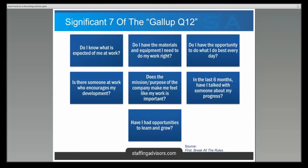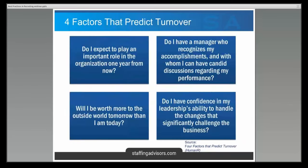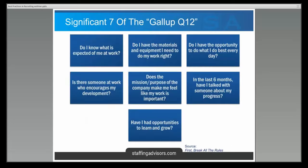Additional key Gallup questions: In the last six months have I talked with someone about my progress? Have I had opportunities to learn and grow? Across all three surveys, the themes are consistent — achievement, accomplishment, performance, and the ability to make a difference. Whether you believe high employee engagement leads to success or that people in successful companies simply feel better about working there, the ability to achieve something and grow professionally is the key thing people are looking for.